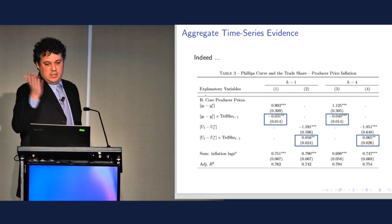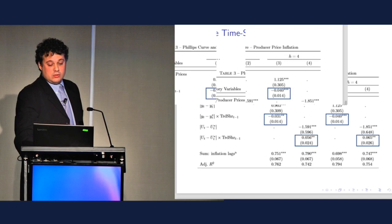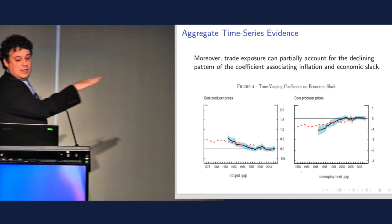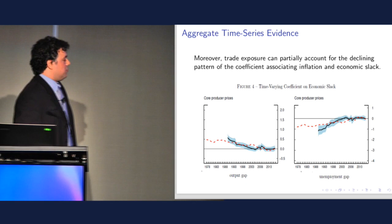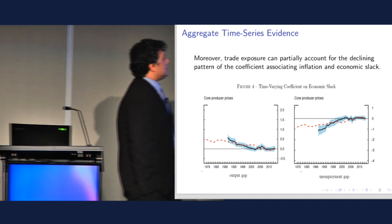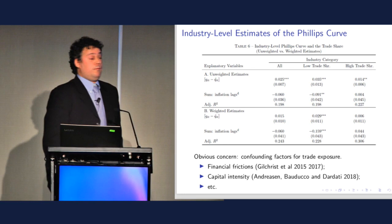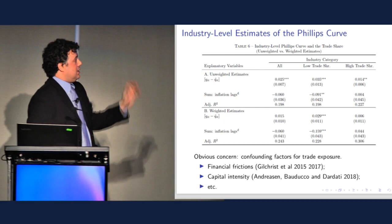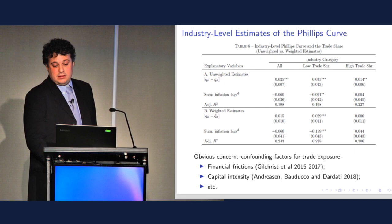Of course, any series with a steady trend might do the job. It's more than that — that interaction can partially explain the declining pattern of the coefficients associating inflation with economic slack if you run a rolling window regression. But of course any series with a steady trend could do the job, so to provide a more robust assessment of the problem they estimate some industry-level Phillips Curves. It's basically a panel estimation of the Phillips Curve, and once they split the sample between low trade share and high trade share, they find that among the high trade share industries the Phillips Curve is flattened.